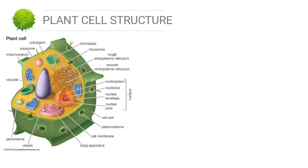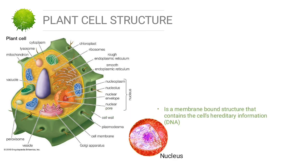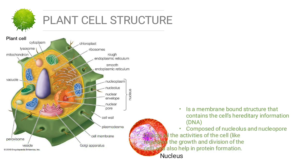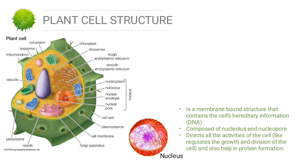The next plant cell organelle is the nucleus. The nucleus is a membrane-bound structure that contains the cell's hereditary information, or DNA. It is composed of the nucleolus and nuclear pores. The main function is to direct all activities of the cell, regulate the growth and division of the cell, and also help in protein formation.